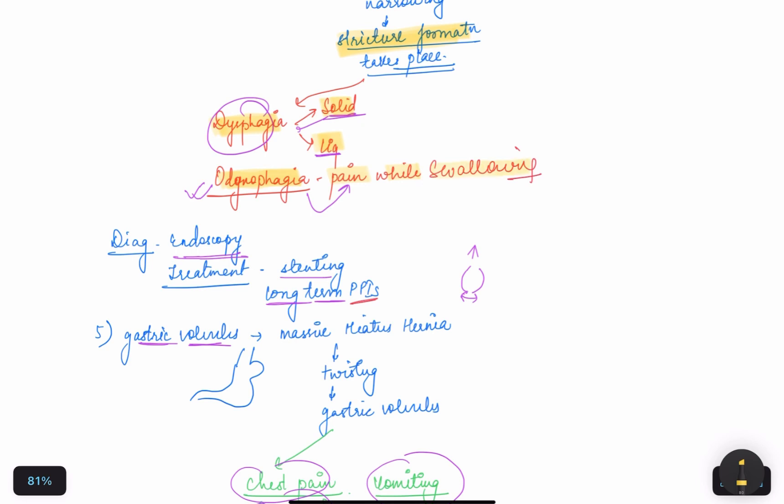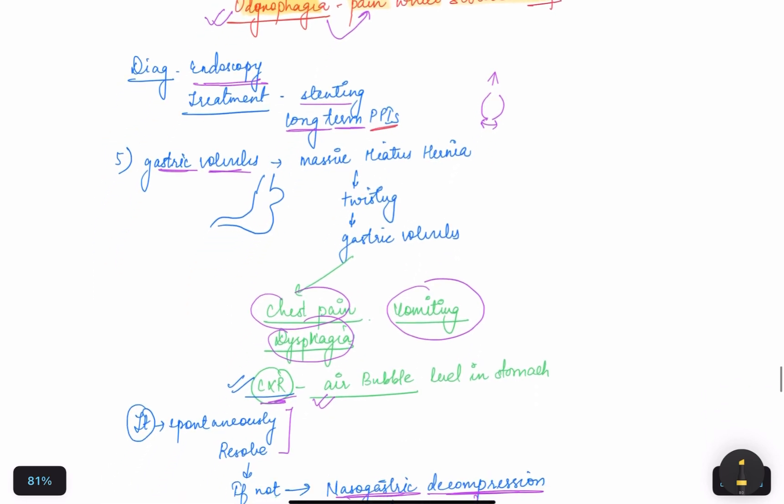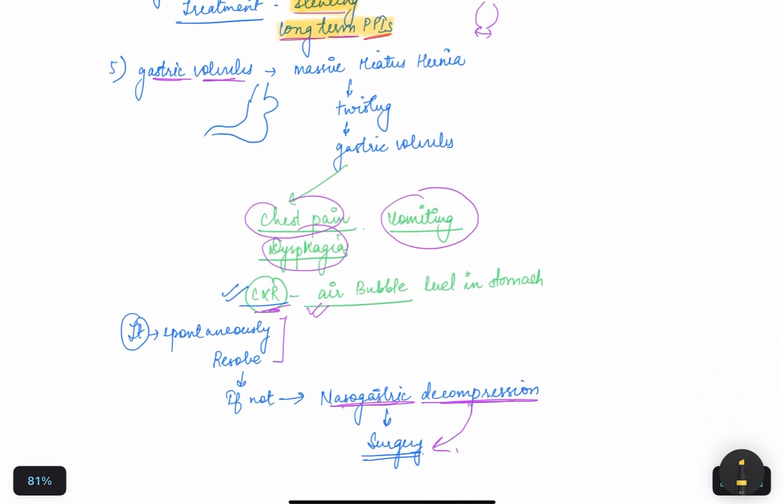Diagnosis can be done by endoscopy and the treatment is by stenting or long-term PPI. Stenting is providing a balloon and inflation of the balloon takes place which will decrease the narrowing. Fifth is gastric volvulus.